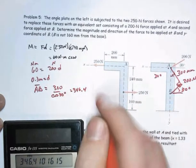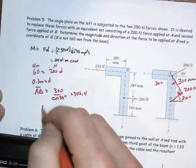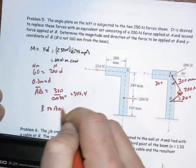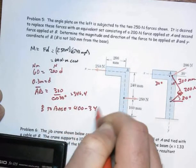So my distance from B to the base equals 400 minus the 346.4.